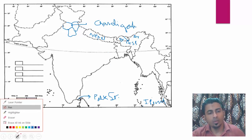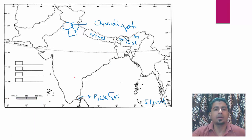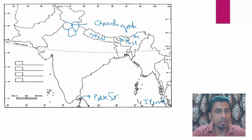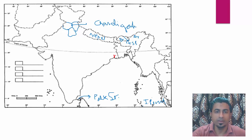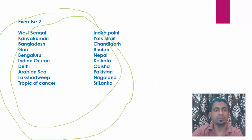Now next we have Kolkata. Kolkata is the capital of West Bengal and it is a port city, but you will not mark Kolkata near the coast. Why? Because we have the Ganga river here which broadens a lot, so we have an inland port. Kolkata is a city somewhere here — you will mark it a little bit inside the mainland. Pardon my writing — it's not good because of the mouse.